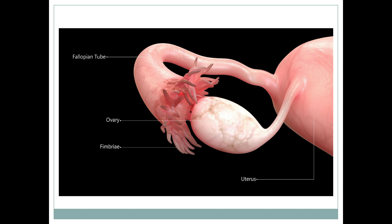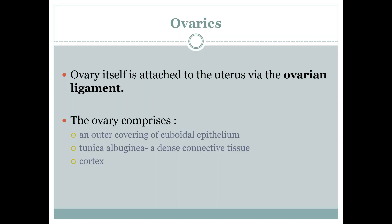Here is another very good diagram for understanding the female reproductive organs. If you focus, you can clearly see a connection between the uterus and the ovary. This connection is basically a ligament which connects the uterus to the ovary, and this ligament is called the ovarian ligament.